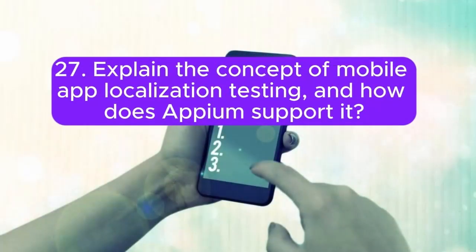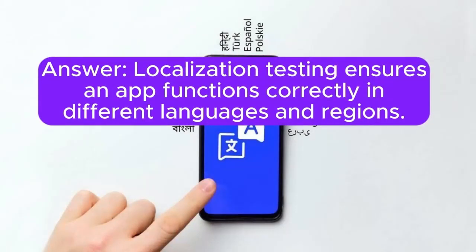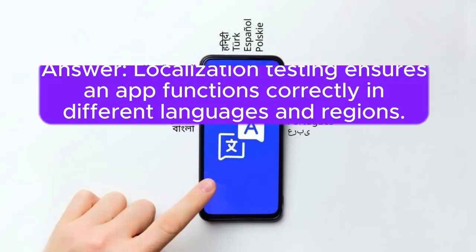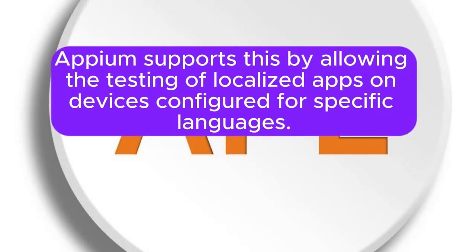27. Explain the concept of mobile app localization testing, and how does Appium support it? Localization testing ensures an app functions correctly in different languages and regions. Appium supports this by allowing the testing of localized apps on devices configured for specific languages.